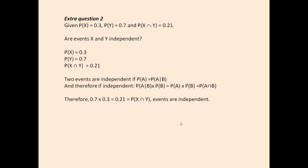Looking at our different rules, we have the multiplication rule: the probability of A given B — a conditional probability — multiplied by the marginal probability of the condition, gives us the probability of A and B. Now, if A and B are independent, the probability of A given B is exactly the same as the probability of A. So I can rewrite the multiplication rule — instead of the probability of A given B times the probability of B, I substitute the probability of A given B with just the probability of A. So if A and B are independent, the probability of A times the probability of B equals the probability of A and B.